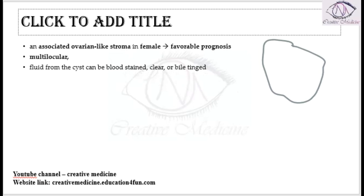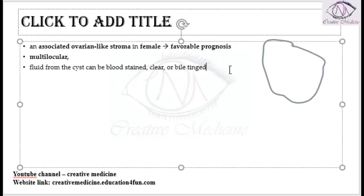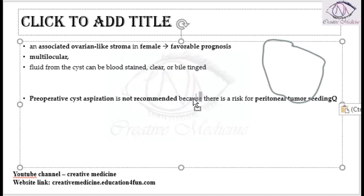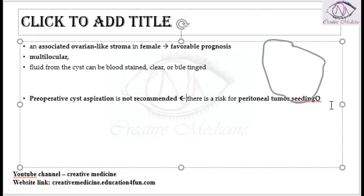Pre-operative cyst aspiration is not recommended because there can be spread of the tumor into the peritoneal cavity, or peritoneal seeding can occur. As a result, pre-operative cyst aspiration is not recommended in biliary cystadenocarcinoma.